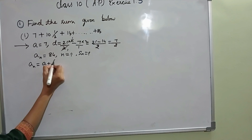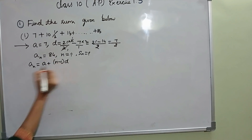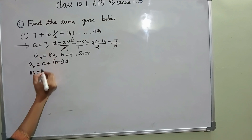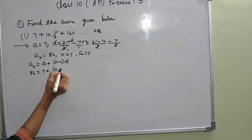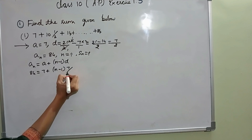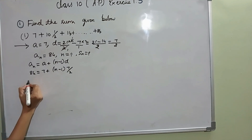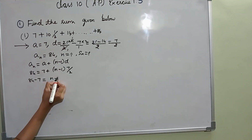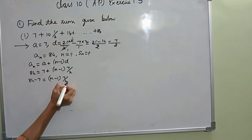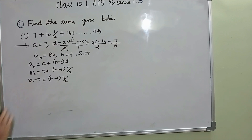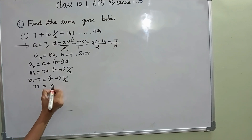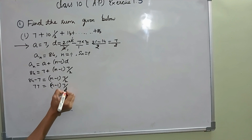AN equal to A plus N minus 1 into D. AN I know, that is 84. A is 7. N I don't know. D is 7 by 2. Transferring 7 to the LHS, it becomes minus 7. So 84 minus 7 equals 77, equal to N minus 1 into 7 by 2.